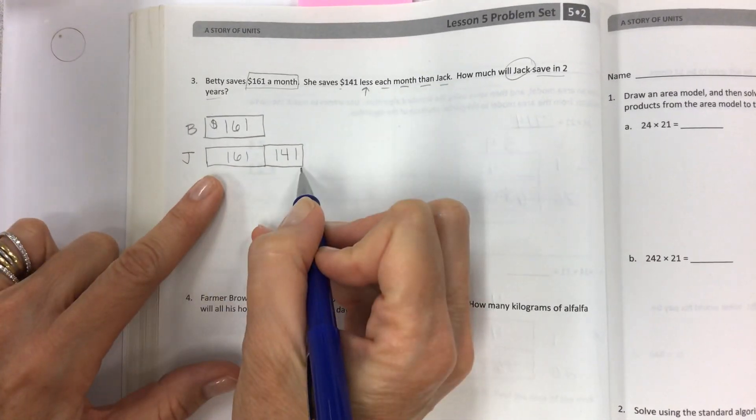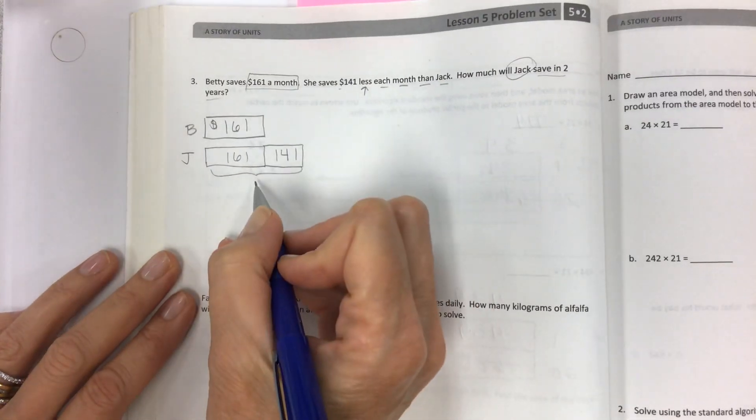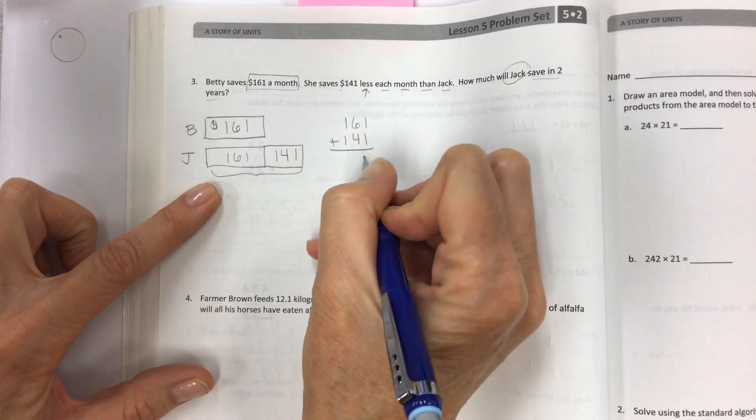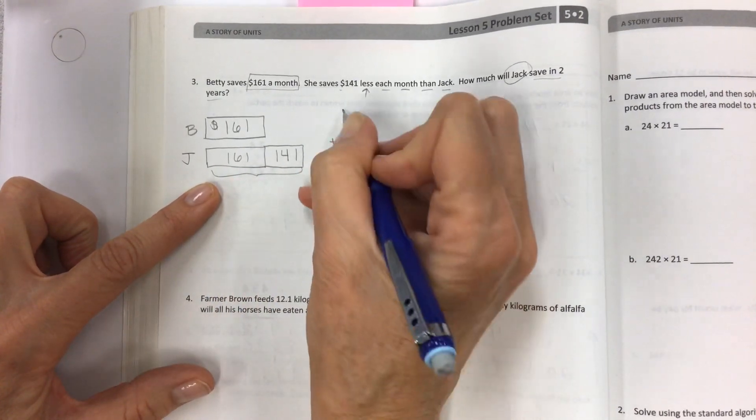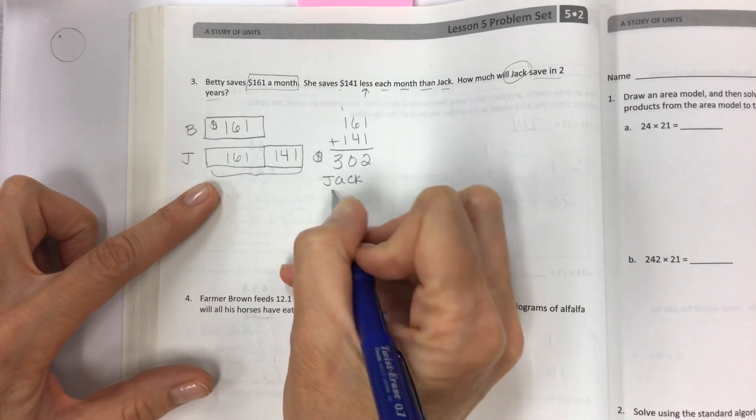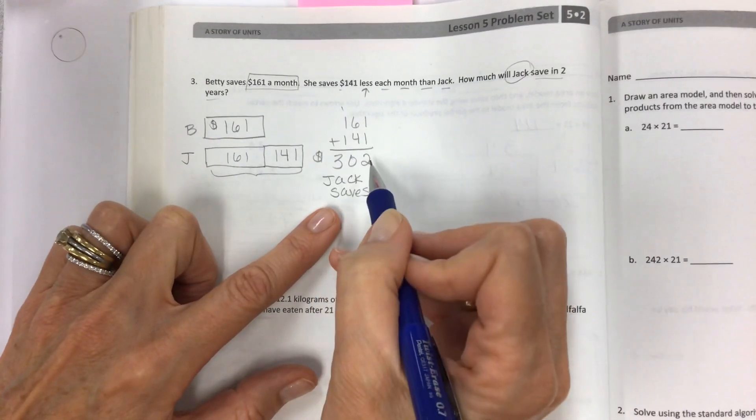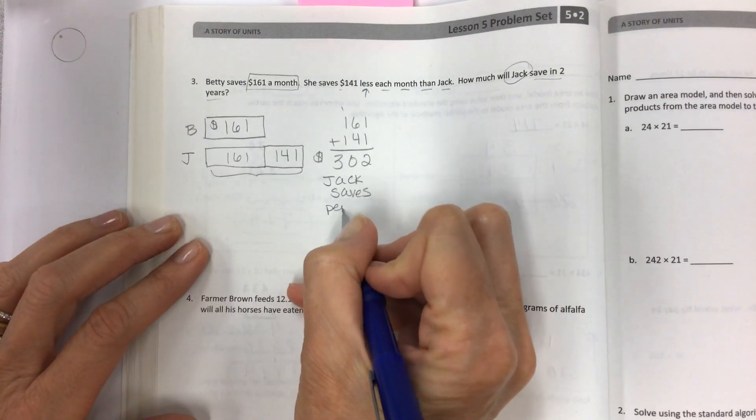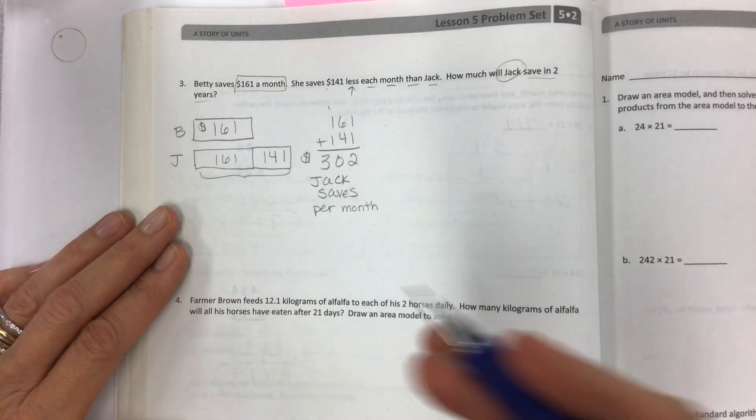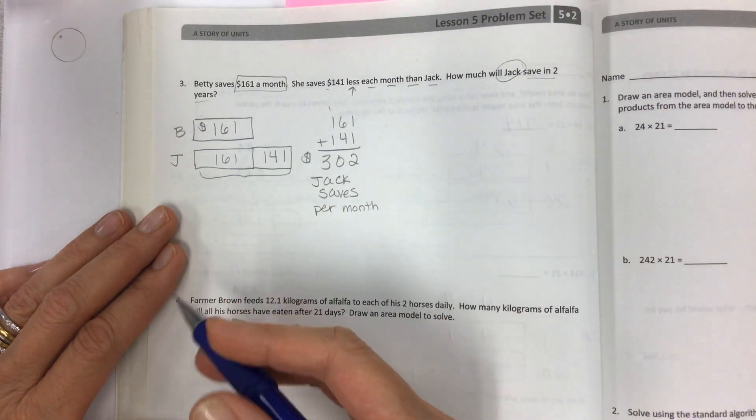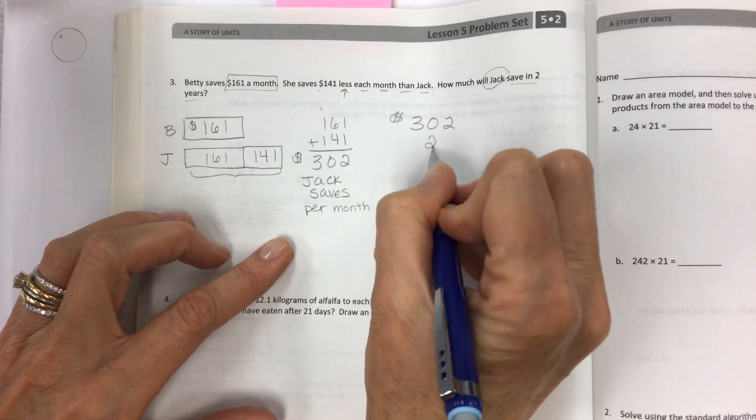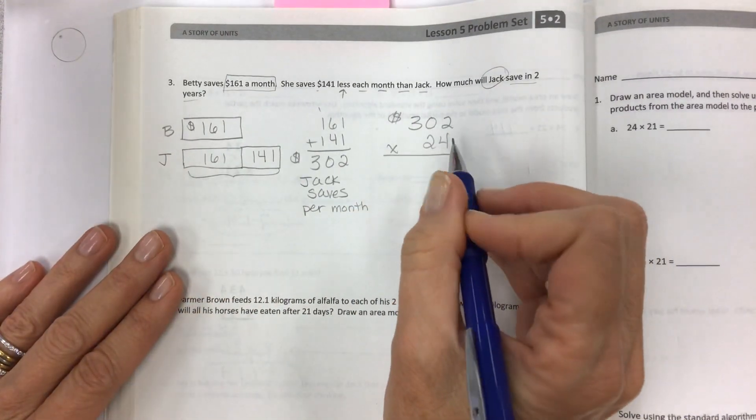Even at the 161, that is 141 dollars less than Jack. Jack saves more. So we need to figure out how much Jack saves. So you're going to do step one and combine these two amounts to see how much Jack saves per month. Label it. Now we know how much Jack saves per month, but that's not the answer to the question. How much will Jack save in two years? Now you have to know how many months are in a year and then double that. So 12 months are in a year, so 24 months are in two years. So take your 302 dollars and multiply it by the 24 months in all those two years.